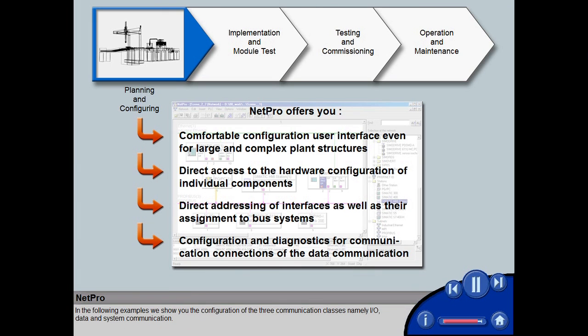In the following examples, we show you the configuration of the three communication classes: IO, data, and system communication.